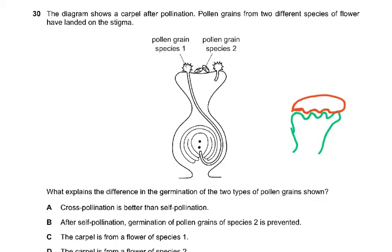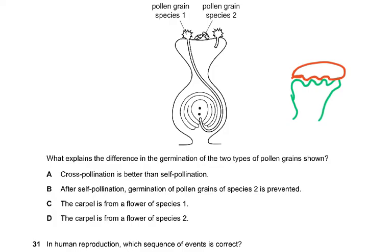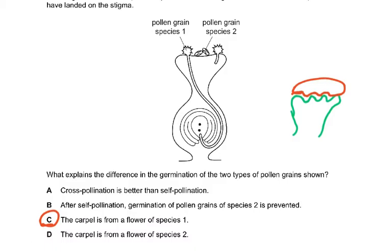What explains the difference in germination? The answer is C: the carpel is from a flower of species 1, and the pollen grain of species 1 has germinated. Species 2 pollen has not germinated — no pollen tube has been formed — because it is a different species. If pollen from a rose falls onto a daisy flower, it will not develop because they are two different species with different chromosome numbers. This is the continuity of species.